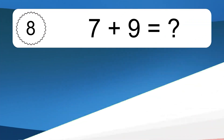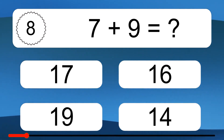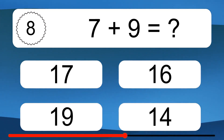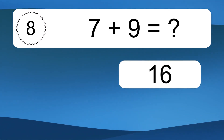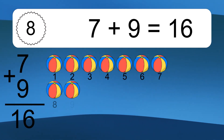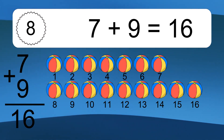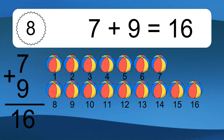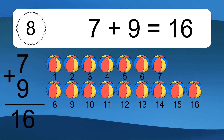7 plus 9 equals what? 7 plus 9 equals 16. Let's count it: 1, 2, 3, 4, 5, 6, 7, 8, 9, 10, 11, 12, 13, 14, 15, 16.